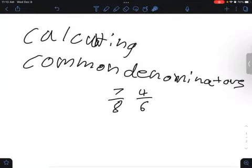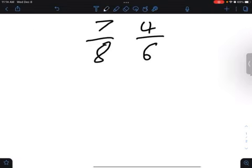We're going to be calculating common denominators. We're going to use these two fractions to make the denominators the same. First we need to calculate the factors of each one.